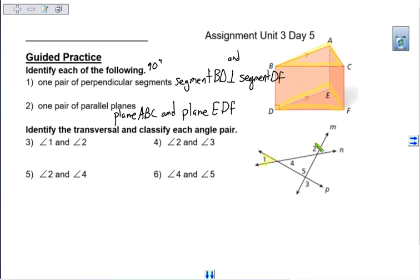Next up, angle one and angle two are both on line N, so line N is the transversal. And the other part, these are one outside, one inside. So we have corresponding angles.